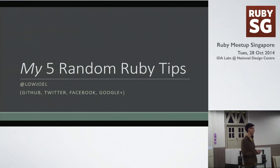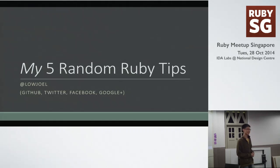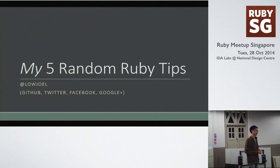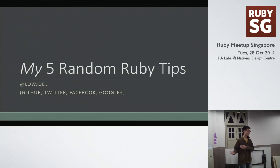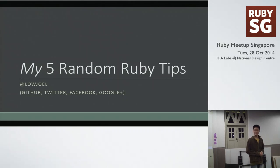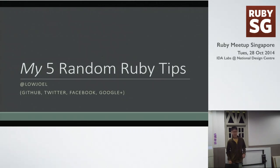So I'm Joel. I've been writing software for a while. I like tools, I like languages, I like basically finding ways to make engineers productive. So my five random Ruby tips today are — actually more Rails tips on how to get your stuff done quicker. Let's jump straight into it.